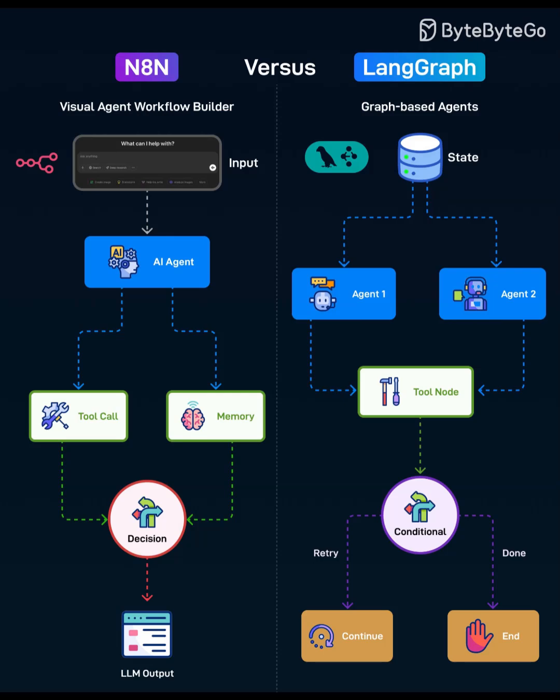Key differences in practice. State management: N8N persists state between nodes but treats it as payloads. LangGraph treats state as a first-class graph object, making it easier to checkpoint and resume. Branching: N8N's conditions are straightforward. LangGraph's conditional edges enable richer loops, fallbacks, and circuit breakers.